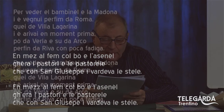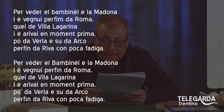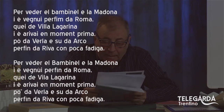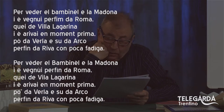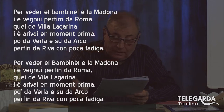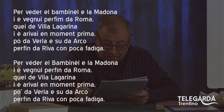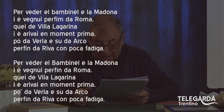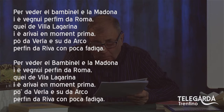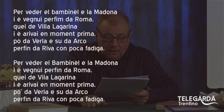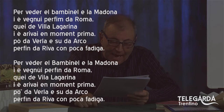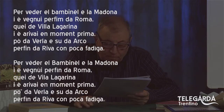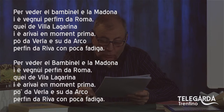'Per vedere il bambinelle e la Madonna, gli è venuto per fin da Roma. Quei di villa la garina, gli è arrivai in moment prima. Pod averla e su d'arco, per fin da arriva, con poca fadiga.' 'Per vedere' - in dialetto diciamo 'veder', quindi dobbiamo mettere un accento tonico che diventa fonico chiuso sulla prima E. 'Per veder', non 'per veder'. 'Bambinelle' è meglio scriverlo maiuscolo perché è Bambin Gesù. La E finale con l'accento aperto. 'Gli è venui' - io ci metterei un accento sulla U. 'Per fin' con l'accento sulla I.